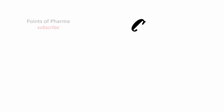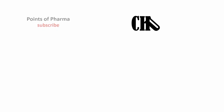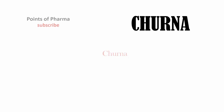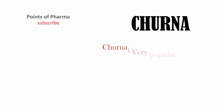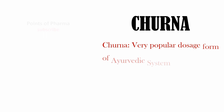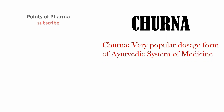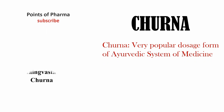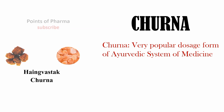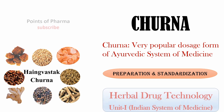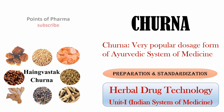Hello everyone, welcome to Points of Pharma. Today the topic is Churn. Churn is a very popular dosage form of the Ayurvedic system of medicine. A very common example of Churn is Hing Vastak Churn. Today we will know the preparation and standardization of Churn.